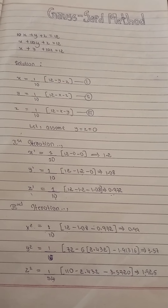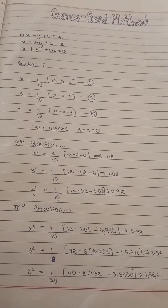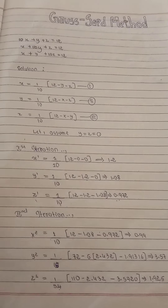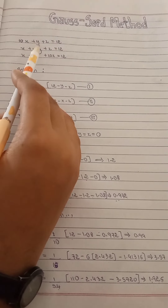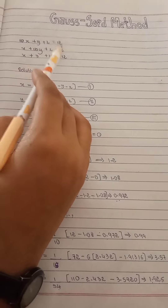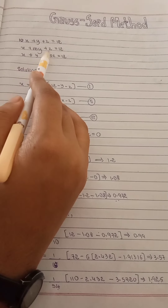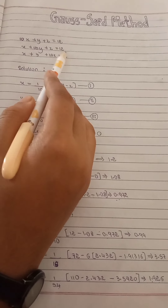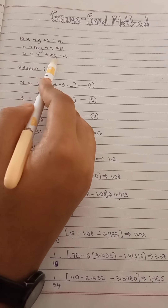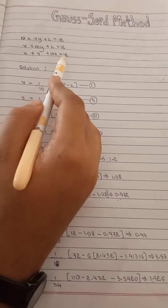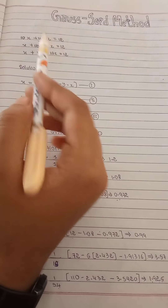Hello everyone, today we are discussing an example on the Gauss-Seidel method. The system of equations is: 10x + y + z = 12, x + 10y + z = 12, and x + y + 10z = 12.